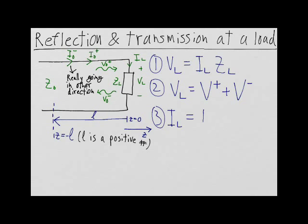The third equation is that IL equals V+ divided by Z0, the characteristic impedance, minus V- divided by Z0.